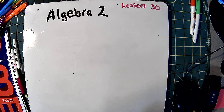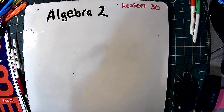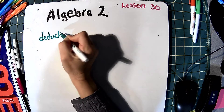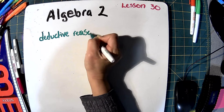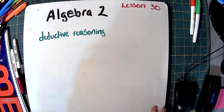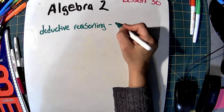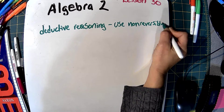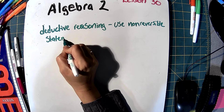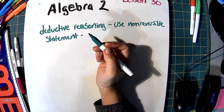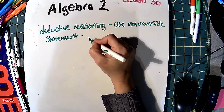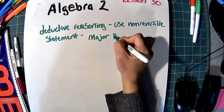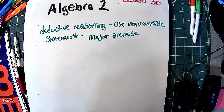Deductive reasoning is a term that we use when we apply a process of reasoning that is non-reversible, so when we're using a non-reversible statement. A non-reversible statement in deductive reasoning is called a major premise.